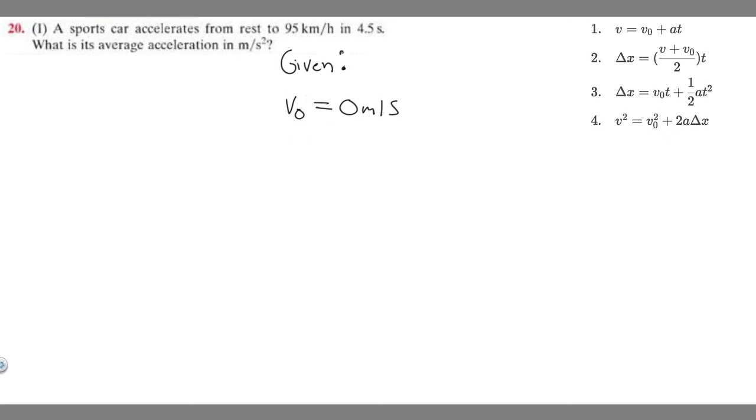Then it goes all the way to 95 kilometers per hour, so its final velocity, which we represent by v, is going to be 95 kilometers per hour. The amount of time we do this in is 4.5 seconds, so t equals 4.5 seconds.